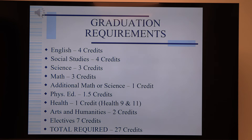Phys Ed requires three classes — actually one and a half credits — taken in 9th grade, 10th grade, and then once in 11th or 12th grade. Health is taken in 9th grade and again in 11th grade, giving you one credit total. At the bottom you'll see 27 credits are needed for graduation. Conrad Weiser students typically take 32 courses while here, so there's a buffer if students have a bad stretch and fail a couple of classes — they're not yet in jeopardy of graduating.